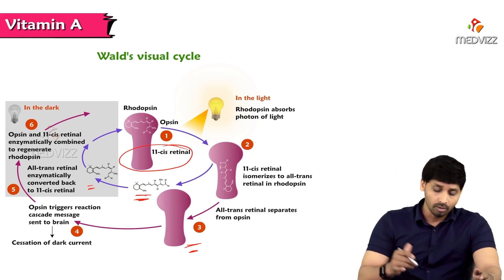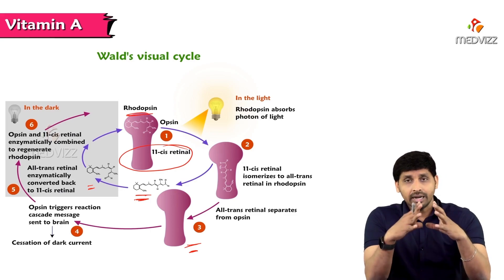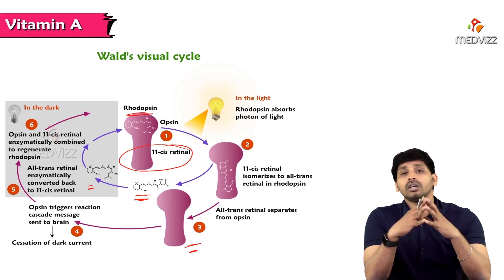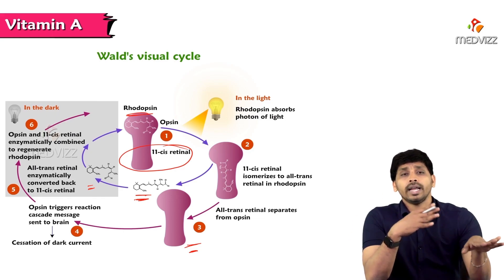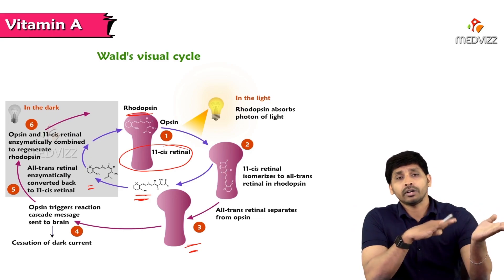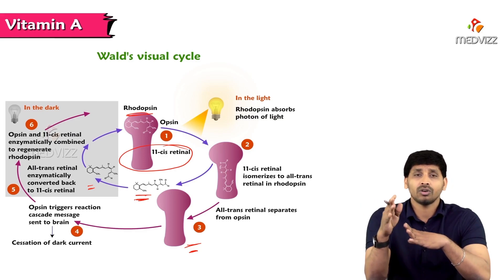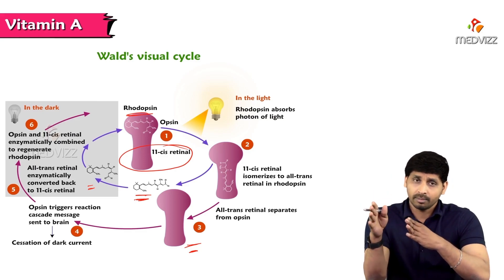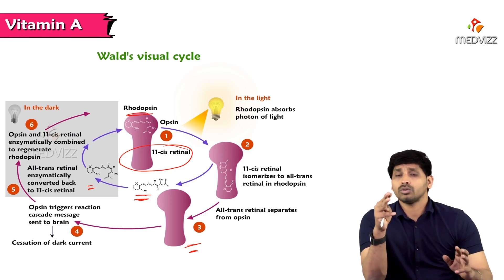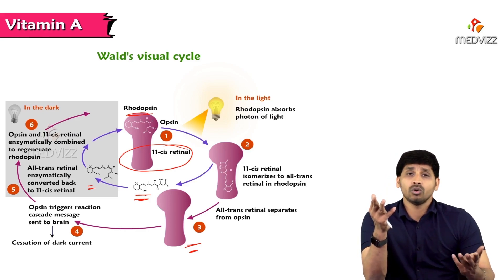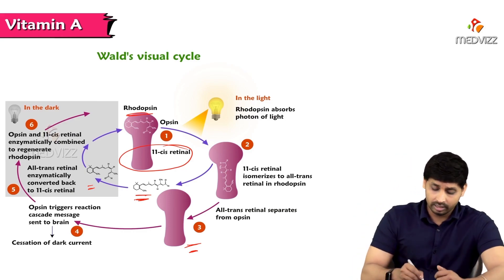This regeneration event takes place at the retinal level, but some all-trans retinal is also transported back to the liver, converted into retinol, and then shipped back to the retina to participate in the conversion to 11-cis retinal, which combines with opsin to form rhodopsin. Three enzymes play a major role in Wald's Visual Cycle.